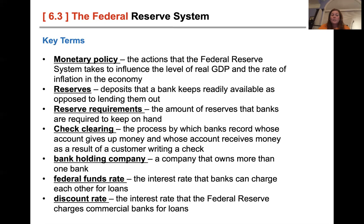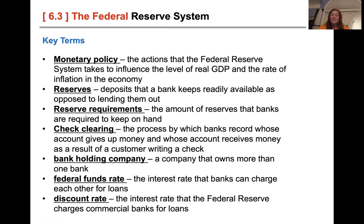A bank holding company is any company that owns more than one bank. The federal funds rate is the interest rate that banks can charge each other for loans — so if First Horizon wants to give a loan to Bank of America, there's a federal funds rate, which is obviously cheaper than what we consumers get. The discount rate is the rate if, say, First Horizon has to borrow money from the Federal Reserve — what's the interest going to be for that?